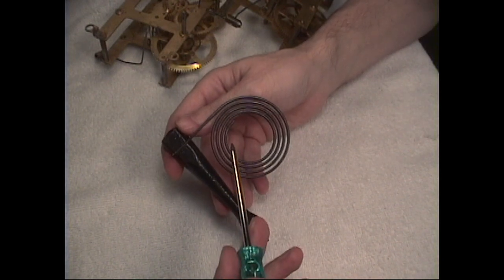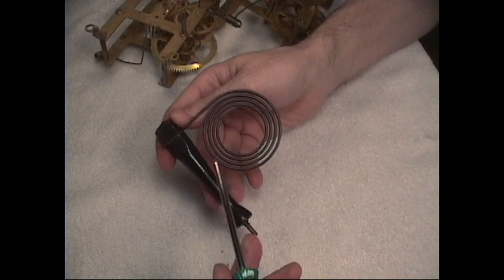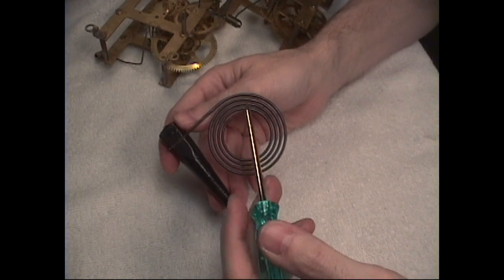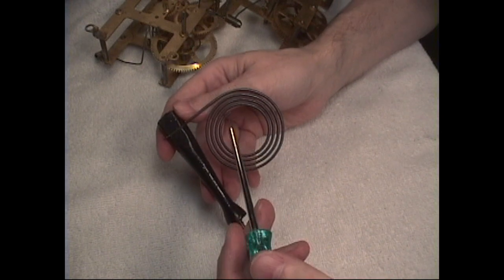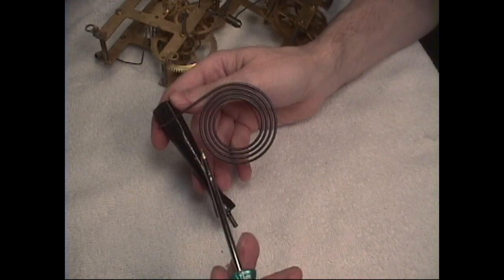Now the process of the gong in terms of making it is, this is steel coiled gong wire. It's flat steel wire that's coiled followed by heating to a bright red and then quickly quenching in water.